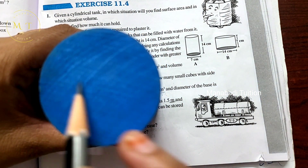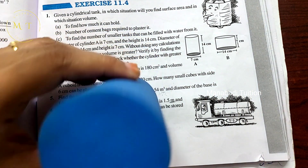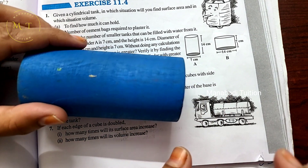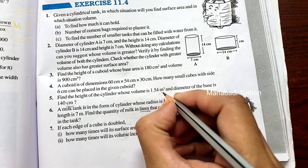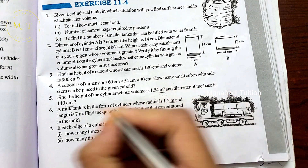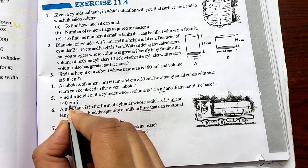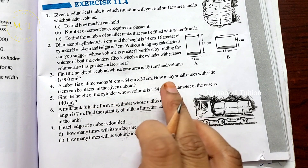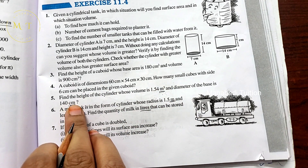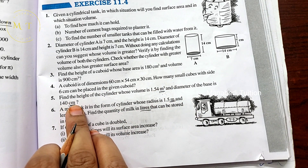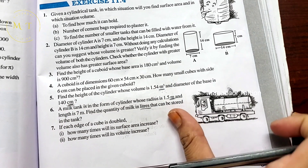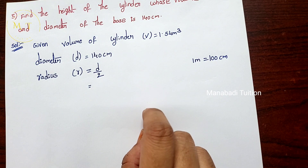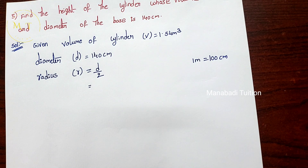The base diameter is 140 centimeters. Notice that the volume is in cubic meters but the diameter is in centimeters, so we need to convert centimeters to meters. Given: volume of cylinder V = 1.54 cubic meters.